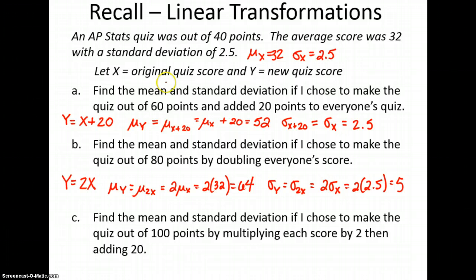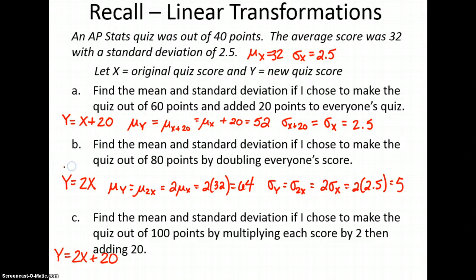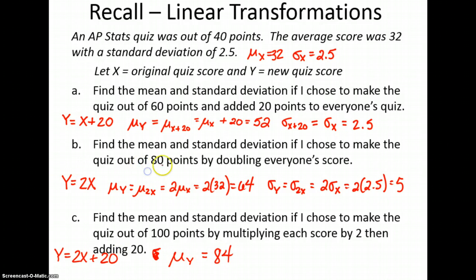So to summarize: adding added to the mean, but adding did not change the standard deviation. Multiplying by 2 multiplied the mean, and multiplying by 2 also multiplied the standard deviation by 2. Part C: if we make the quiz out of 100 by multiplying by 2 and then adding 20, the new mean of Y is going to be 2 times 32 plus 20, which is 84. The standard deviation of Y multiplies by 2, and the adding 20 does nothing, so it's still 5.